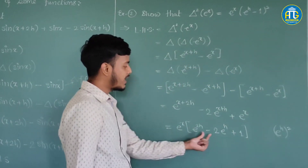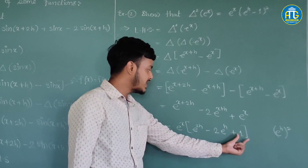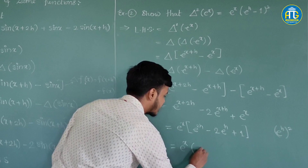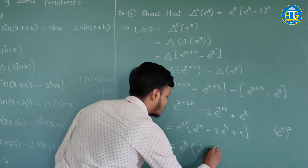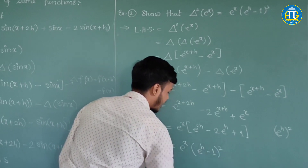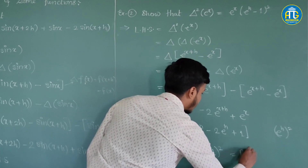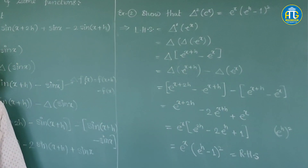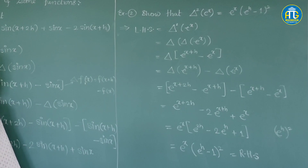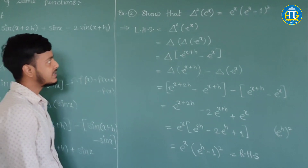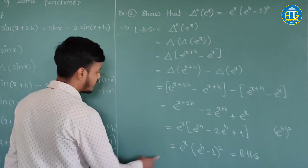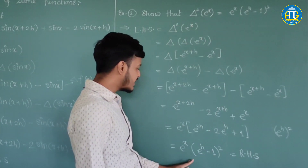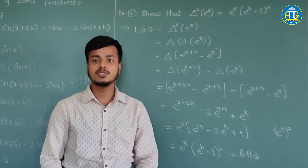Now e^(2h) can be thought of as (eʰ)², so e^(2h) − 2eʰ + 1 is a perfect square: (eʰ − 1)². This is nothing but your RHS, proving the second result. So Δ²(eˣ) = eˣ(eʰ − 1)².